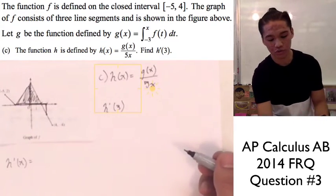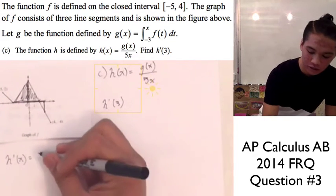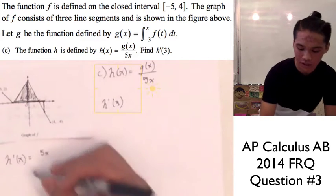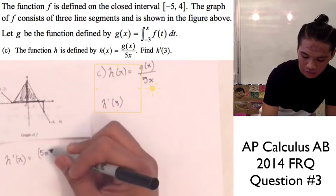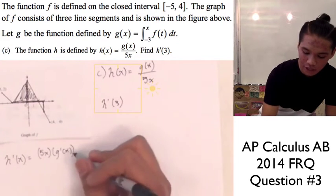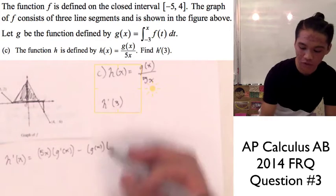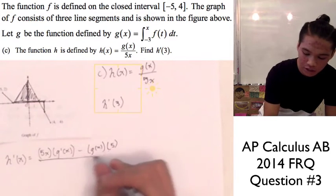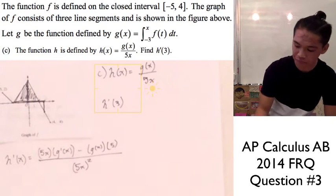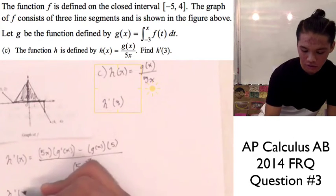Our low function is 5x and our high function is g of x. So we have 5x times g prime of x, minus g of x times the derivative of the lower function which is just 5, all over 5x squared. Once we have that, we plug in our value of 3 for x.